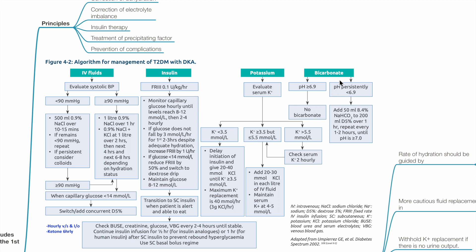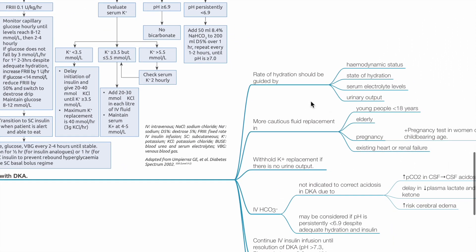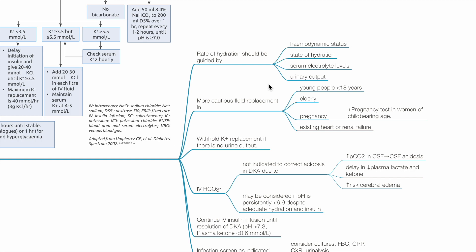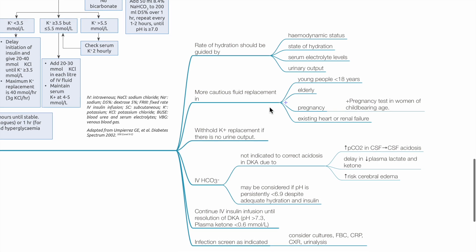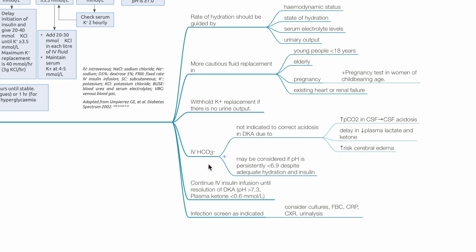Bicarbonate is not recommended but can be considered if pH is less than 6.9. Rate of hydration should be guided by hemodynamic status, state of hydration, serum electrolyte levels, and urine output. More cautious fluid replacement in young people less than 18 years old, elderly, pregnancy, and patients with existing heart or renal failure. Perform pregnancy tests in women of childbearing age. Withhold potassium replacement if there is no urine output.